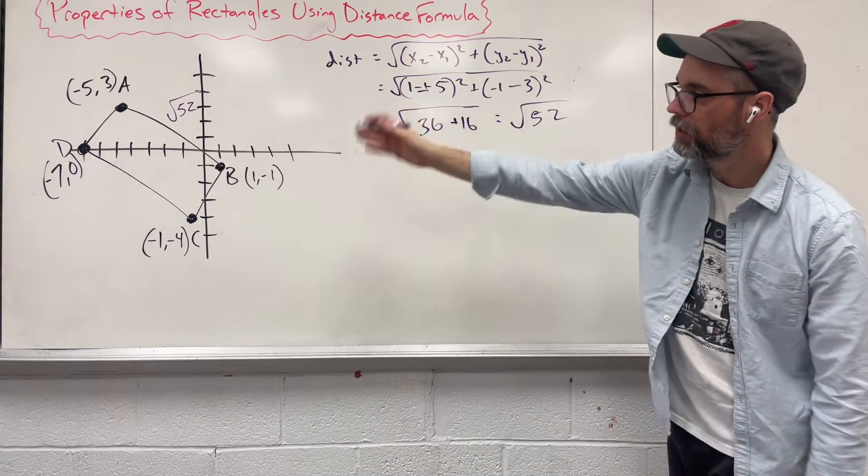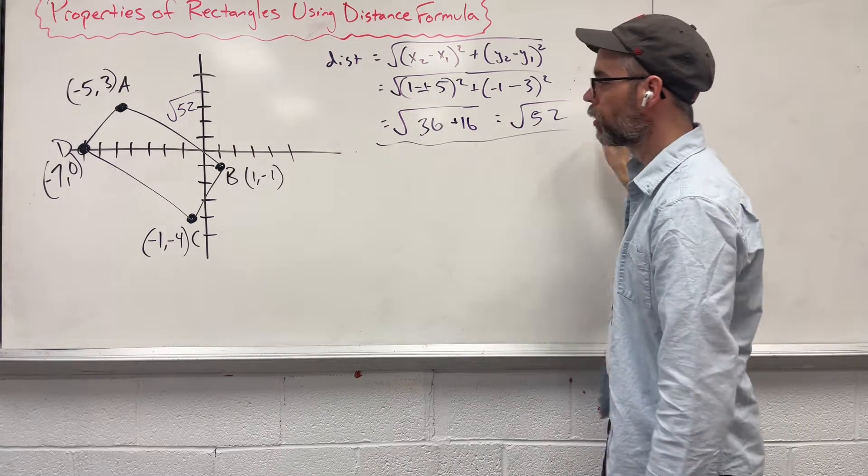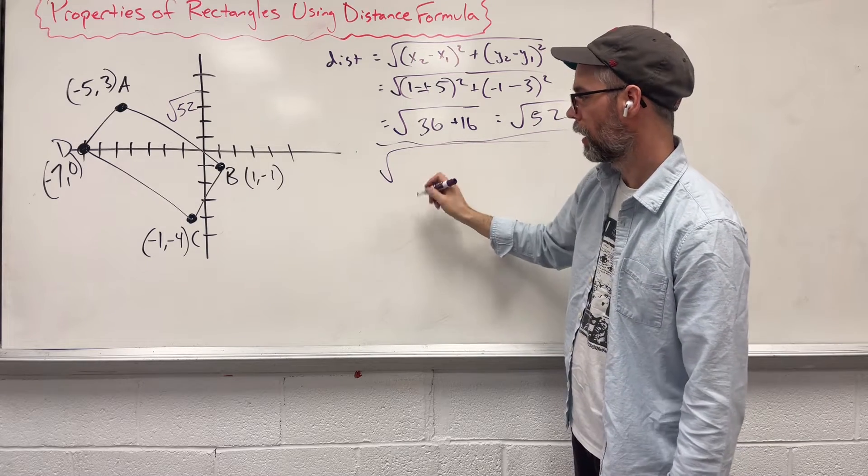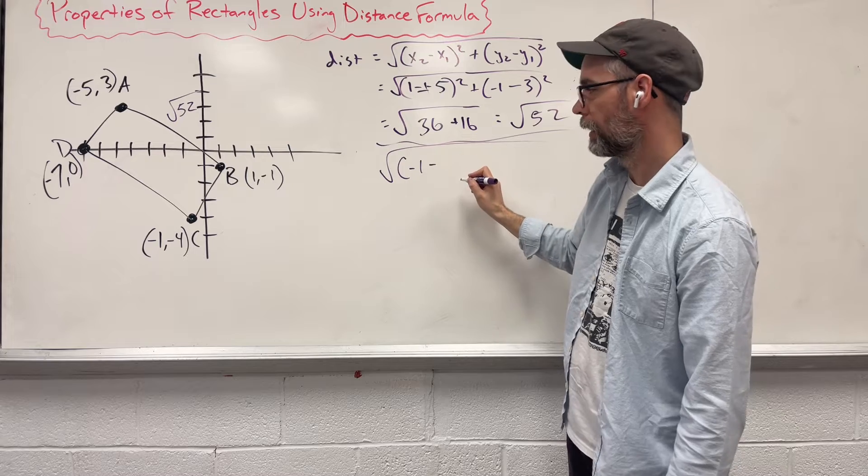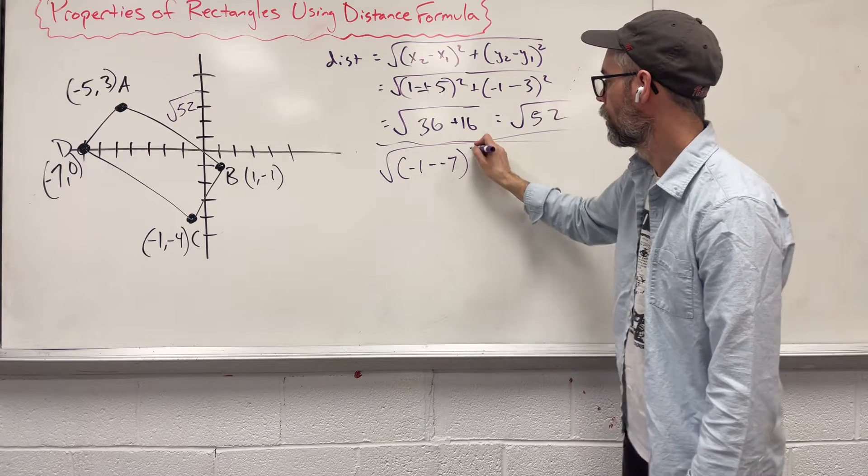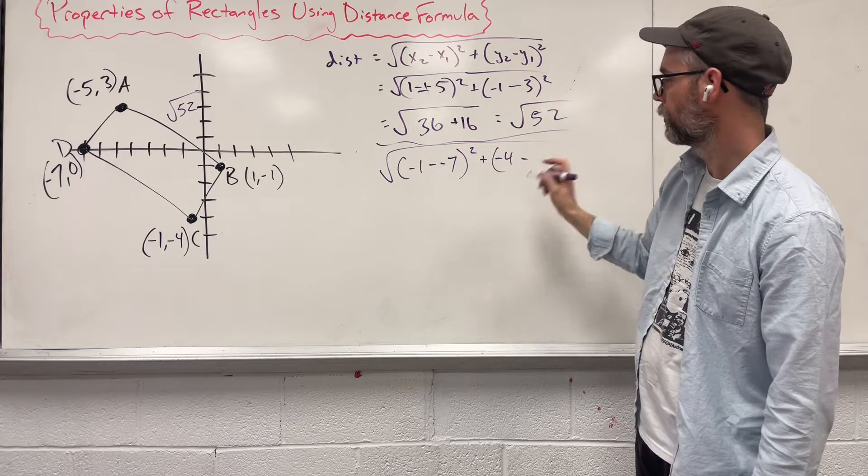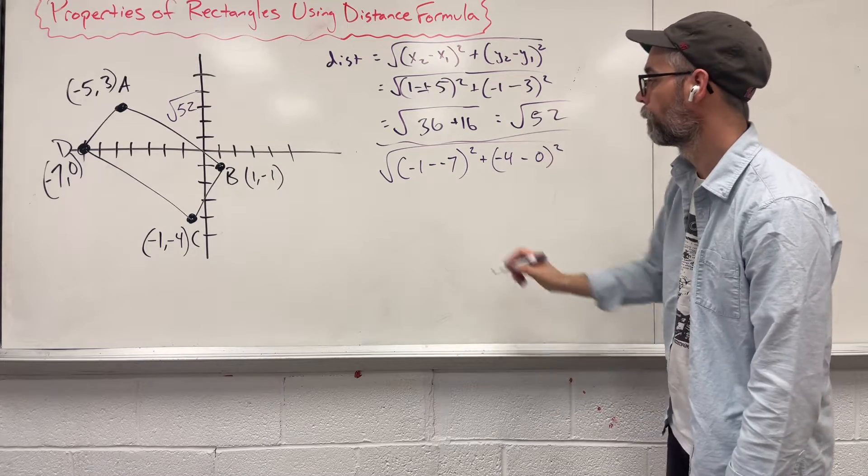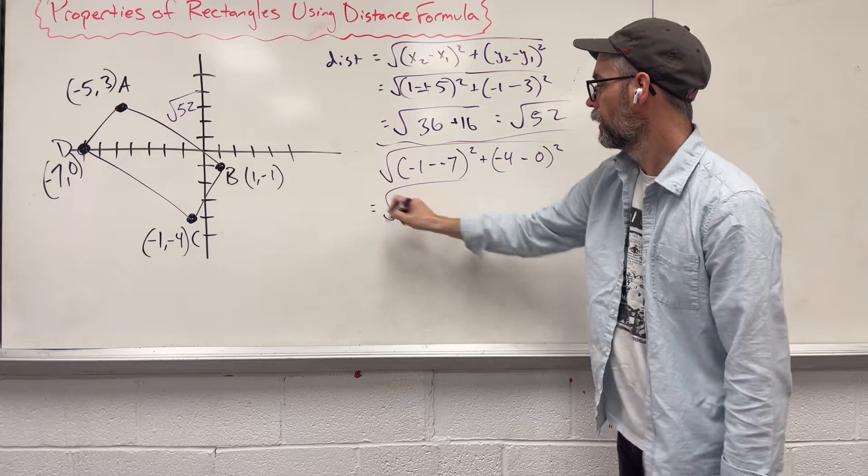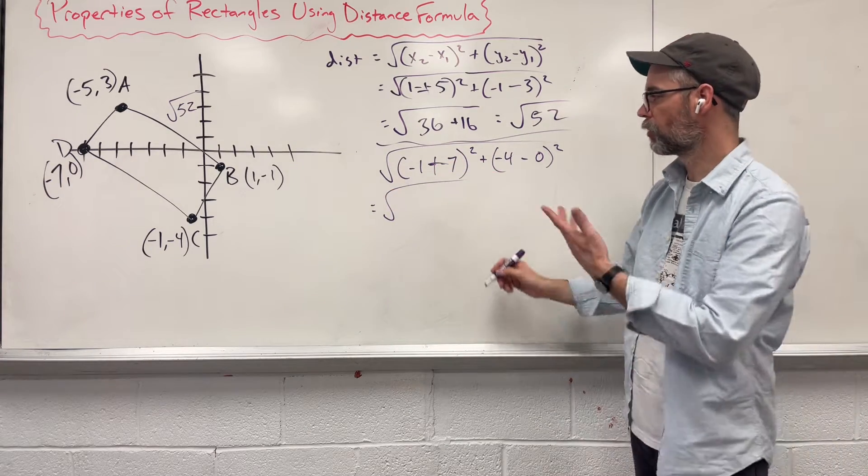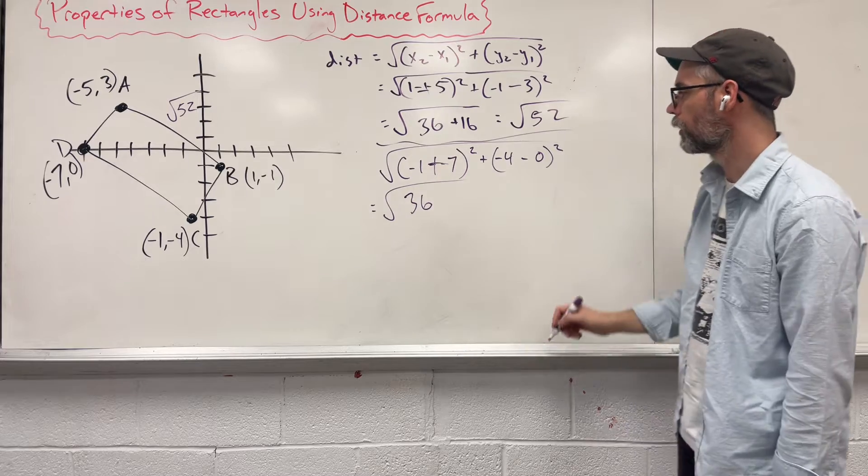Let's try CD on the bottom there. We're going to do the same thing. Square root, we're going to say negative 1 minus negative 7 squared, plus negative 4 minus 0 squared. Leaving us with, that's a plus, 7 minus 1 is 6, 6 squared is 36. So far looking good.